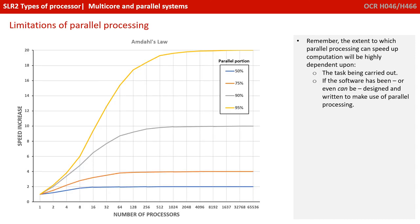The extent to which parallel processing can speed up computation is highly dependent on a couple of things: firstly, the actual task being carried out, and secondly, whether the software has been — or indeed even can be — designed and written to make use of parallel processing.